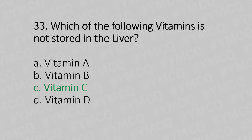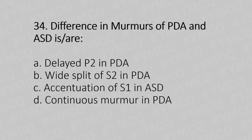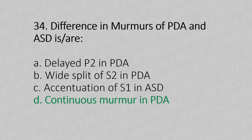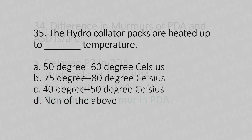Question 34: Difference in murmurs of PDA and ASD — Option A: deleted P2 in PDA. Option B: wide split of S2 in PDA. Option C: accentuation of S1 in ASD. Option D: continuous murmur in PDA. The answer is Option D: continuous murmur in PDA.